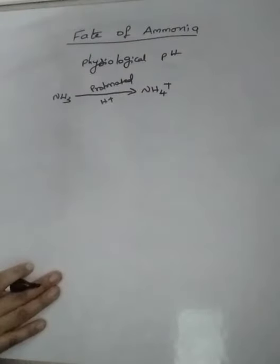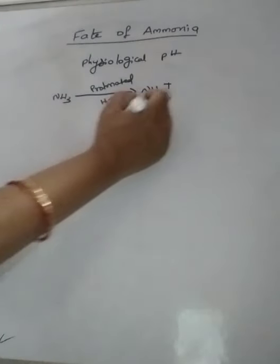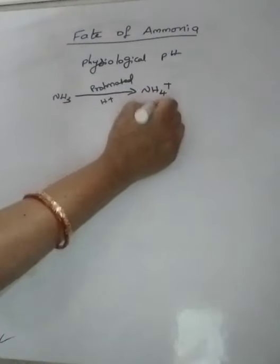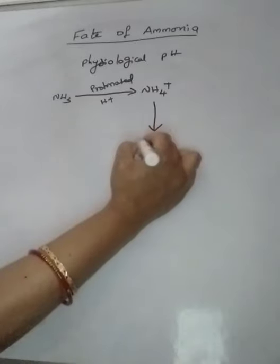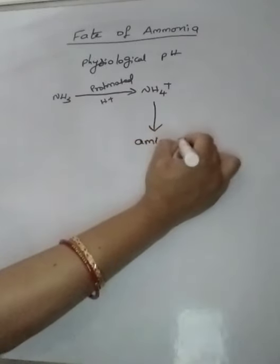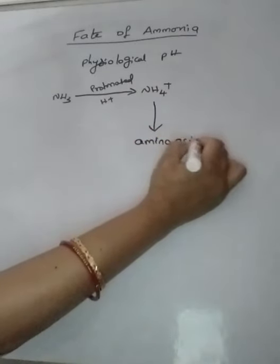Ammonium cannot be accumulated in the plants. So what they will do? This ammonium will be used to synthesize amino acids in the plants.